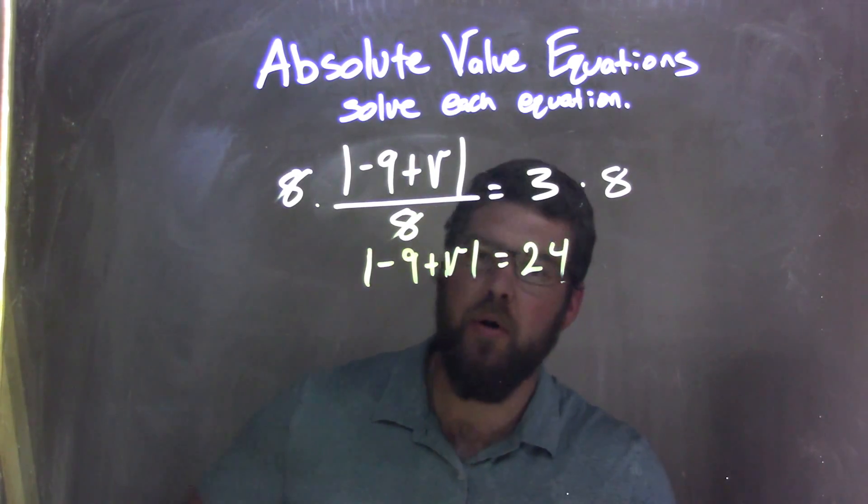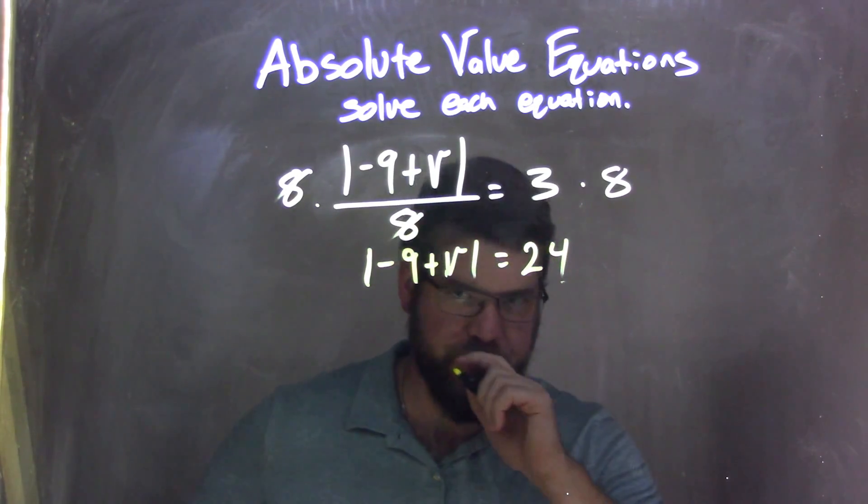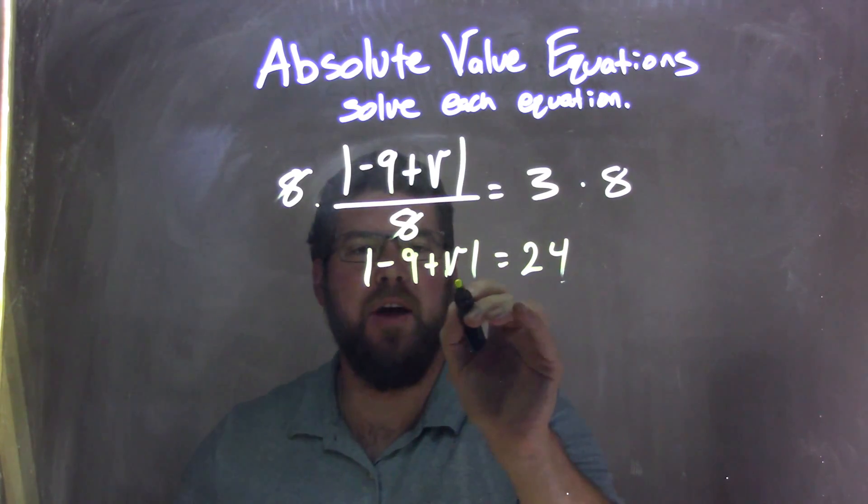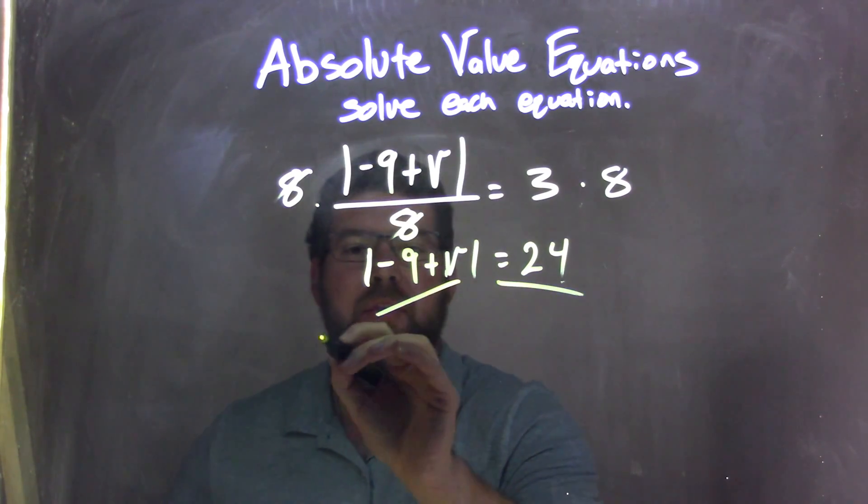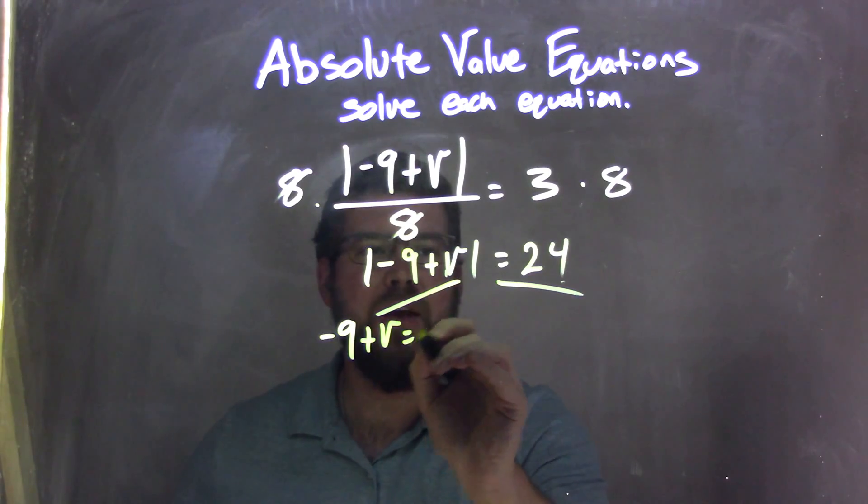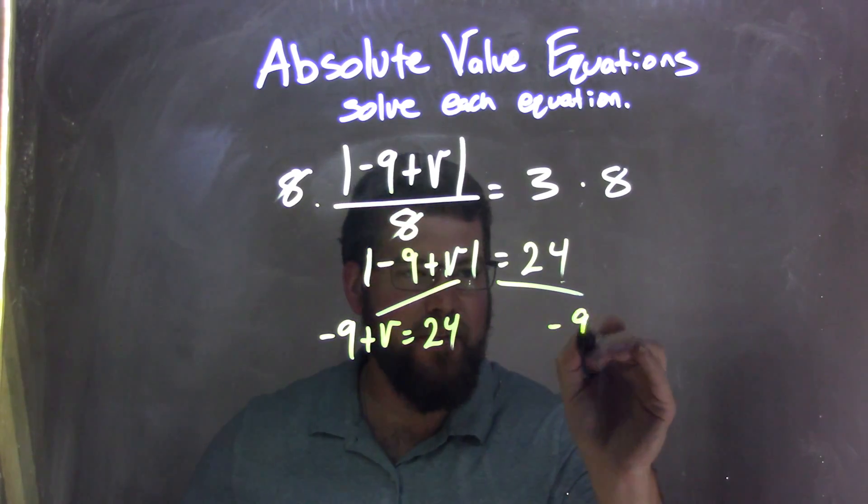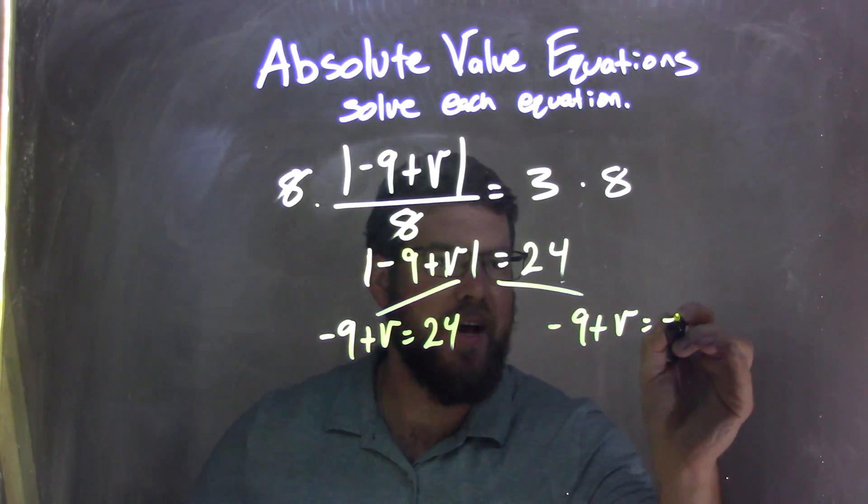From there, I can break this apart into two equations because the absolute value is already isolated, leaving me with negative 9 plus V equals positive 24, and negative 9 plus V equals negative 24.